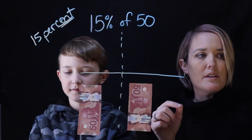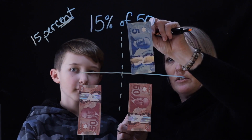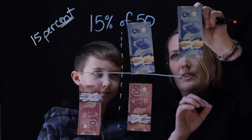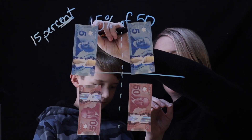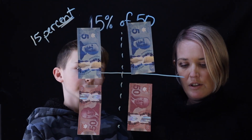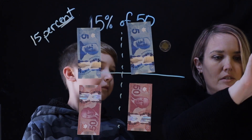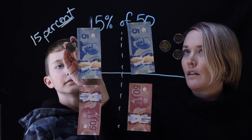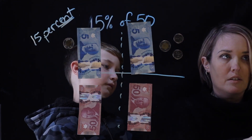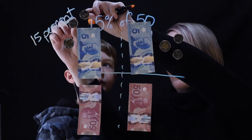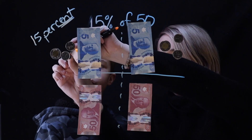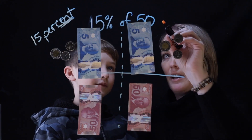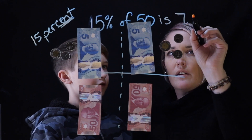It's also $7.50. So let's put the $7.50 — there's $5, we need another $5. There's another $5, and now we need $2.50. So here's a toony, and here's 50 cents. And here's a toony here, and I've got 50 cents here too. So there we go — if someone makes $50, they have to give you $7.50. So 15% of 50 is $7.50.